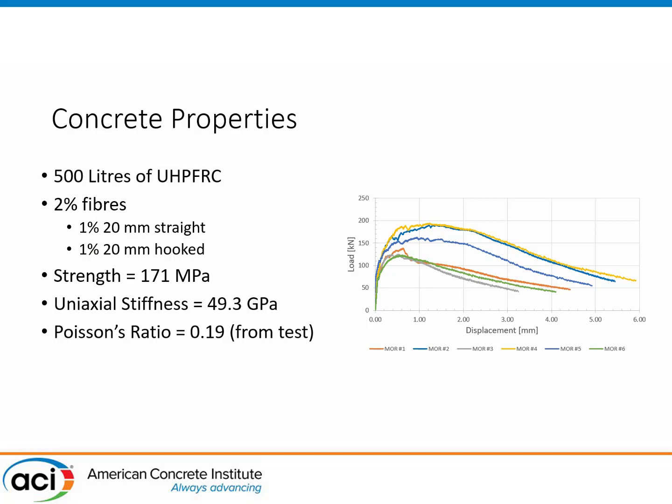The material behavior: we had about 500 liters of material with 2% fibers — 1% were 20 mm straight fibers and 1% were 20 mm hooked fibers. Compressive strength was about 171 MPa after steam curing, the same at 14 days as at 50 days when we did the test. Uniaxial stiffness from compression testing was 49.3 GPa. Because we're doing compression in one direction and tension in the other, the stiffnesses measured are biaxial values, allowing us to extract Poisson's ratio — we got 0.19. It's nice to see linear elastic principles working before things crack. Results from modulus tests and flexural prism tests show some variation but overall good behavior and significant strain hardening.